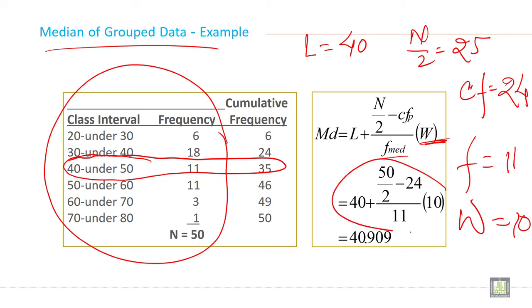So put all this value, all this calculated value on this formula like this: 40 plus 25 minus 24 by 11. And when you solve this, you will get 40.909. This is the method to calculate median for group data.